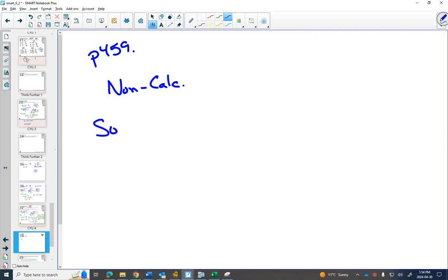What does a non-calculator question look like? It'll look very much the same. Solve for theta, zero degrees less than theta less than 360 degrees, but they tell you something like sine of theta equals negative one half.